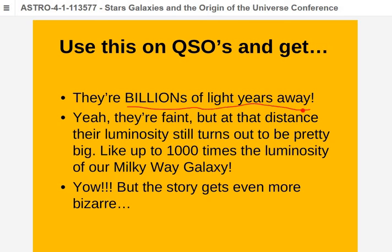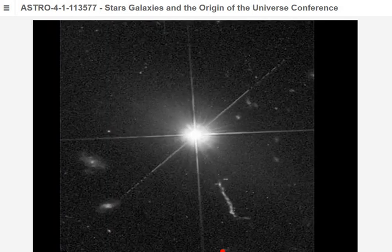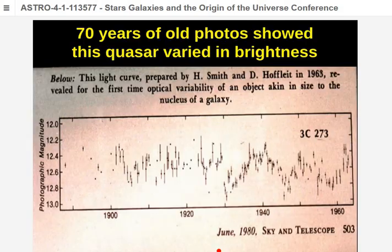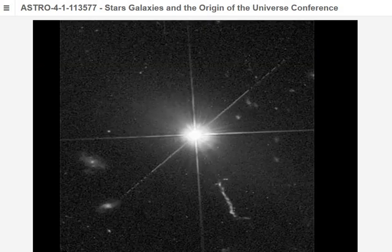At those distances quasars might seem dim, but they're not — they're up to a thousand times the luminosity of an entire galaxy. The story gets even more bizarre: in a photo you can see a quasar much brighter than neighboring galaxies around it. These are cores of galaxies — like Seyfert galaxies on steroids. In Seyfert galaxies there's a bright central star, but in quasars the central core is so brilliant you can't even see the surrounding galaxy.